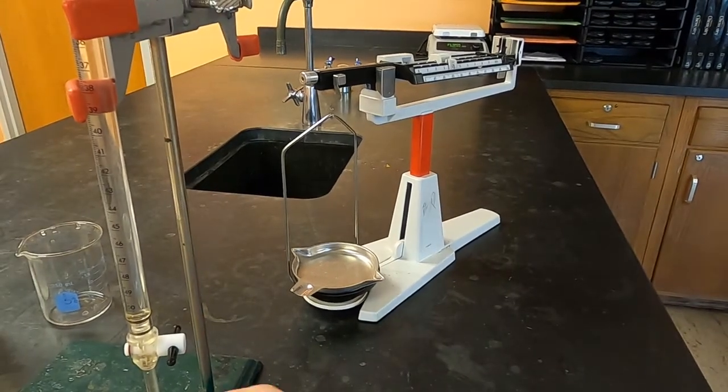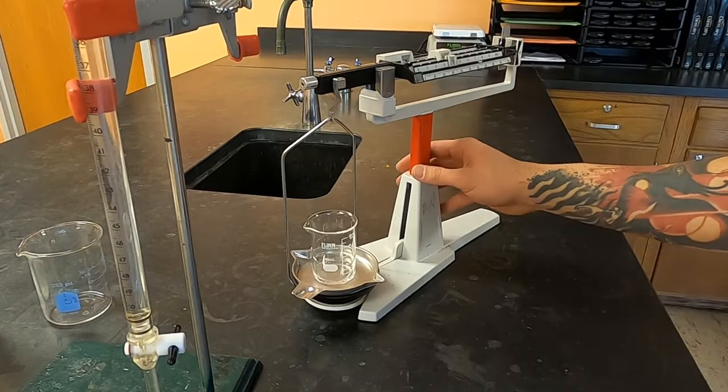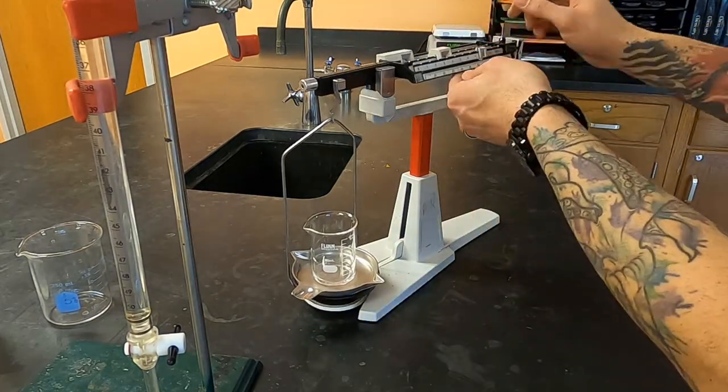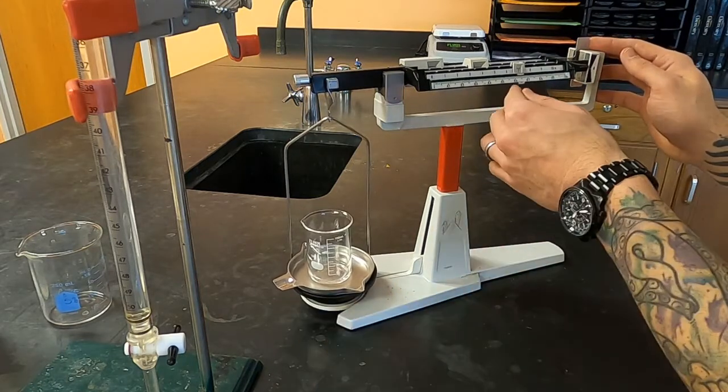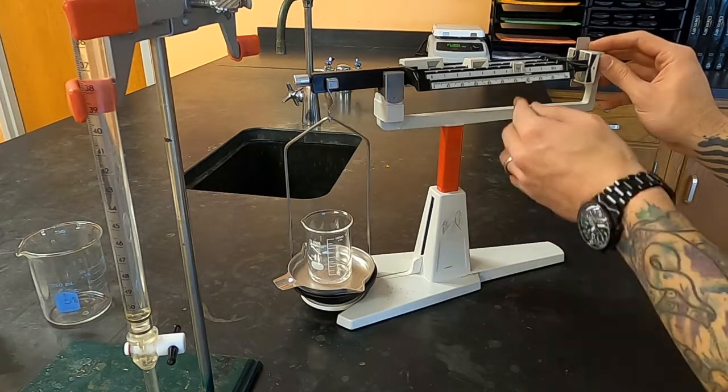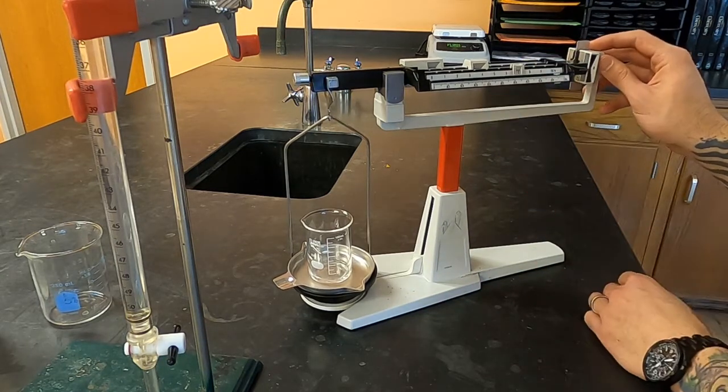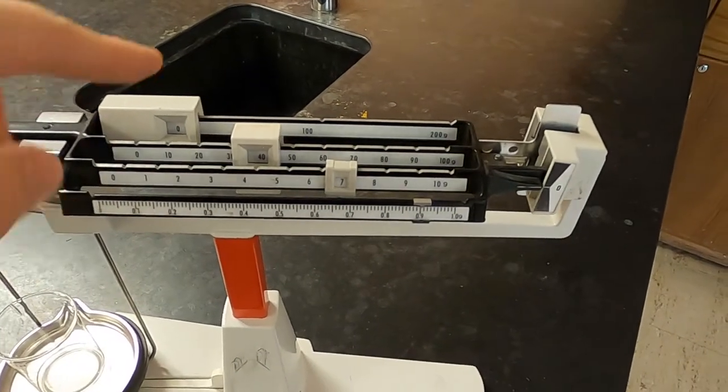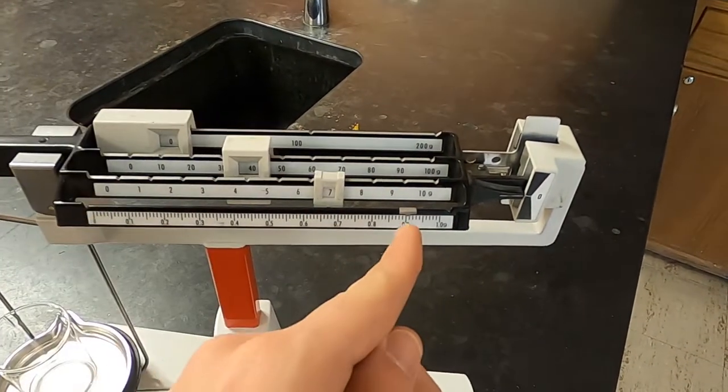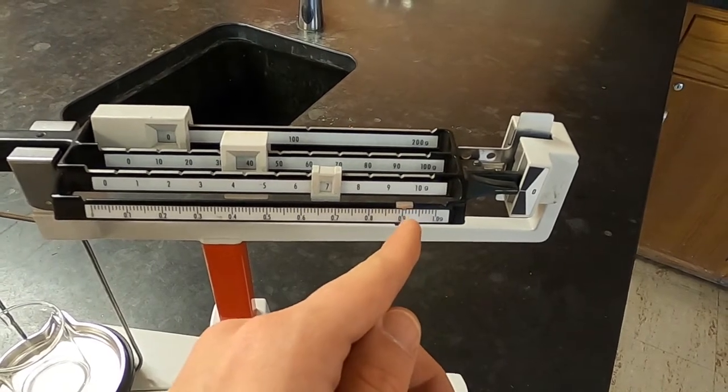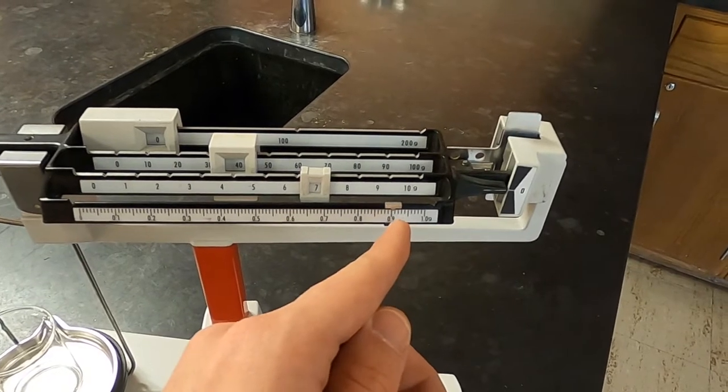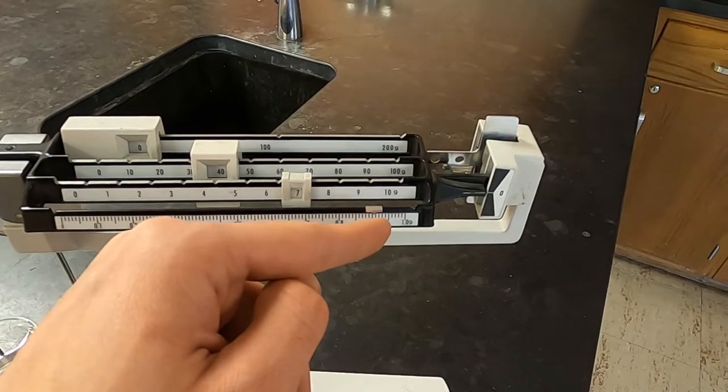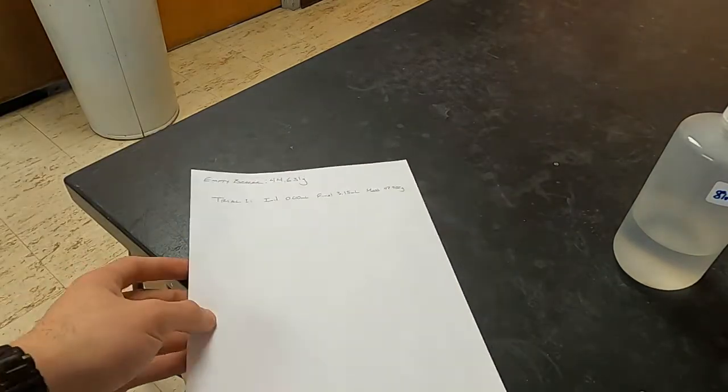The next step is going to be to weigh this beaker with the salt water in it. Now you can see the mass is 47.9 and it's not quite to the 0.91 so I'm going to estimate that it's maybe two tenths of the way there so I'm going to say it's 47.902. So these are my data for trial one. I'm going to perform four extra trials.